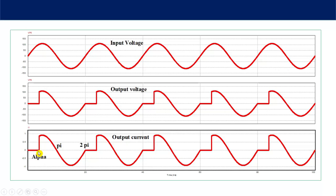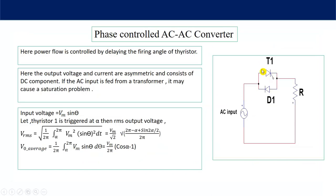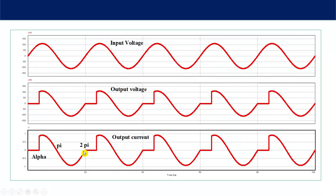Now let's see the output current. The output current will be in phase with the output voltage, as the load is resistive. The output current flows from alpha to 2π: from alpha to pi through thyristor 1, and from pi to 2π through the diode. From pi to 2π the voltage is reversed, so the diode gets forward biased. Then at 2π, the diode is off. At pi plus alpha, the thyristor conducts to 3π, then from 3π to 4π the diode conducts — and this waveform pattern repeats.